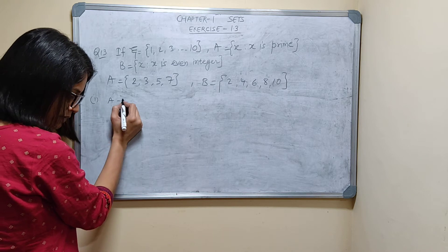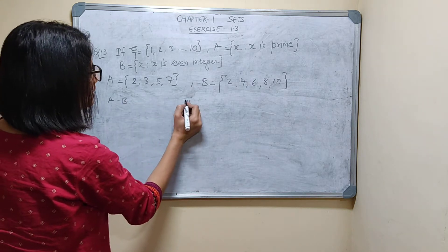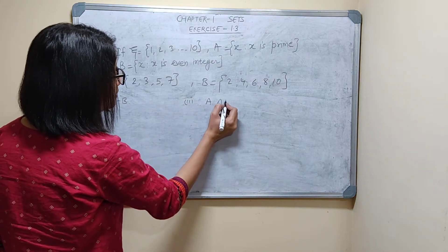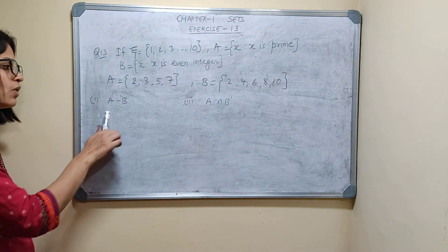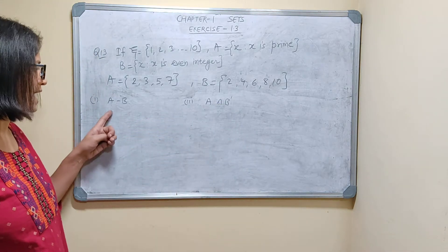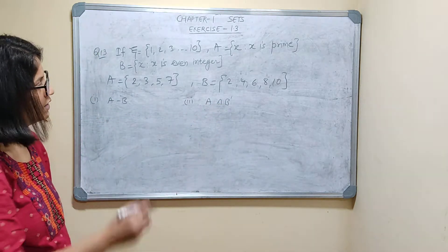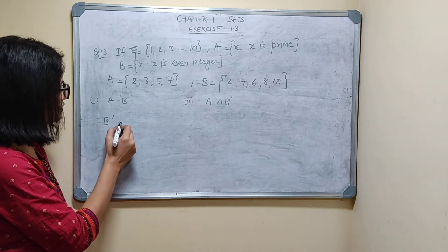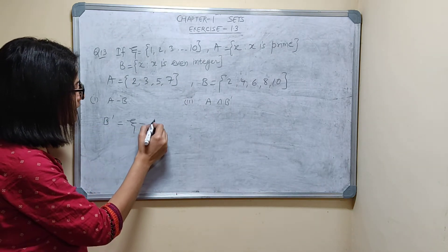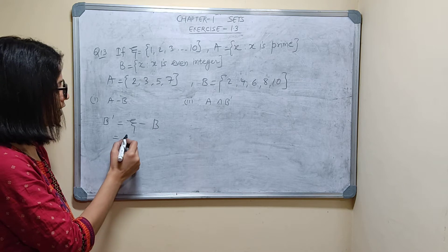A minus B and second is A intersection B dash. For solving these 2 parts I need A, B, and B dash. So first I will find B dash. That is what? Epsilon minus B. This is what?